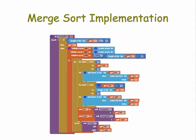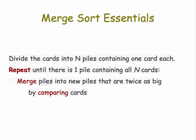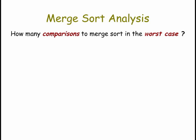What about merge sort? Well, here's its implementation, and again we want to simplify this. We want to abstract away the details and look at the essentials of the algorithm. In merge sort, remember, we divide the cards into n piles containing one card each, and then we merge the piles into new piles that are twice as big by comparing cards until there's just one pile containing all n cards. So just as we did with bubble sort, let's ask the question: how many comparisons are required to do a merge sort in the worst case?